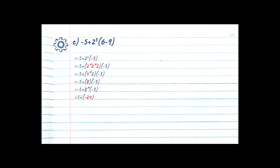A positive times a negative gives us a negative, and 8 times 3 is 24, so that gives us negative 24. Now we have two signs — a sign with no number is essentially saying 1, so it's plus 1 times negative 24. A positive times a negative gives a negative, and 1 times 24 is still 24, so we simplify to minus 24. There's no more multiplication or division, so we move to step 4: addition and subtraction. We have a subtraction: 5 minus 24 is equal to minus 19. Our final answer is minus 19.